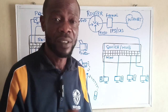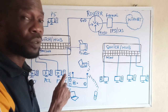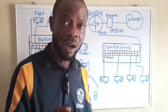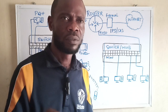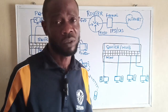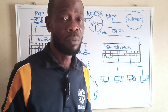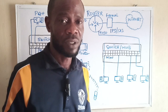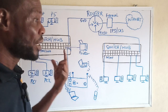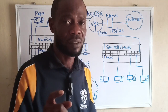Half-duplex means one computer must finish transmitting before another can start. In today's networks, hubs are rarely used. You hardly see a hub in a company or organization network environment, though you may still see them in some home networks that don't require a large number of connected computers. Each hub port runs at a speed of 10 megabits per second.